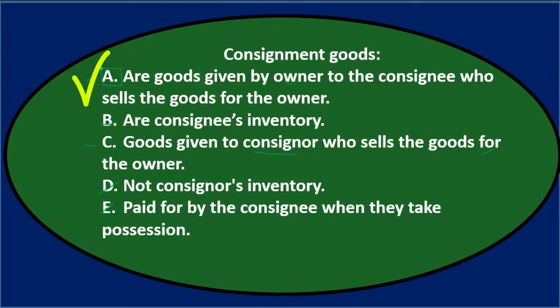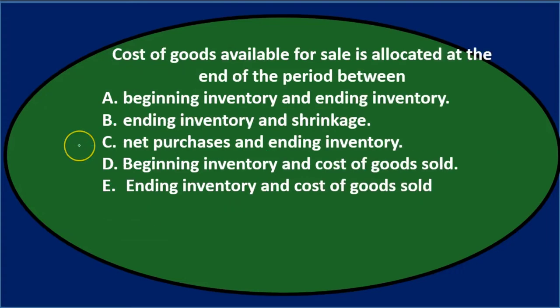Consignment goods — A — are goods given by owner to the consignee who sells the goods for the owner. Next question.